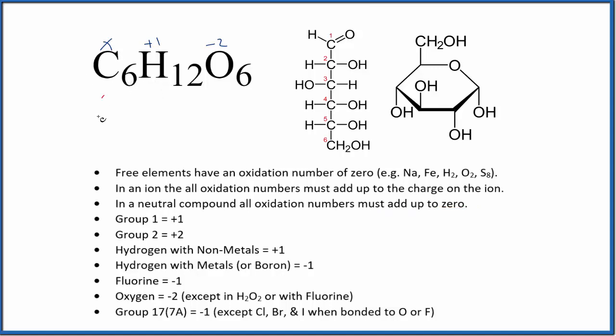We have six times X, six X, and then we have twelve times one, that's twelve, and six times negative two, that's negative twelve. All that equals zero. So six X equals zero. X is going to equal zero.